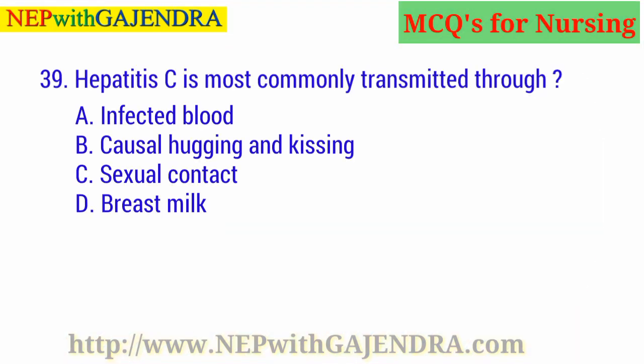Hepatitis C is most commonly transmitted through: A. Infected blood. B. Casual hugging and kissing. C. Sexual contact. D. Breast milk. The right answer is A: Infected blood.